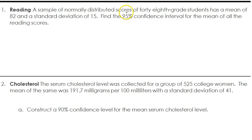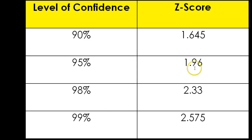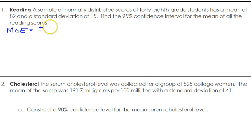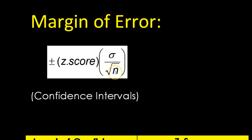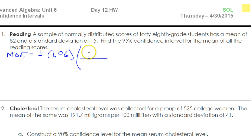First of all, we need to know what the z-score is going to be. For this margin of error, we're going to do plus or minus, and for the 95% confidence interval, the z-score is 1.96. So we go 1.96 times. According to the formula, we need the standard deviation over the square root of the sample size. The standard deviation is 15, and the sample size is 40 8th grade students.